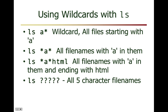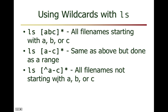Using wildcards with ls: ls a* gives all files starting with 'a'; *a* gives all files with 'a' anywhere in the name; ls *.html gives files ending in html. Question marks match any single character — for example, five question marks matches any five-character filename. To get all files starting with a, b, or c, use ls [abc]*. You can also use a range like ls [a-c]*, or use the caret symbol [^abc]* for files NOT starting with a, b, or c.